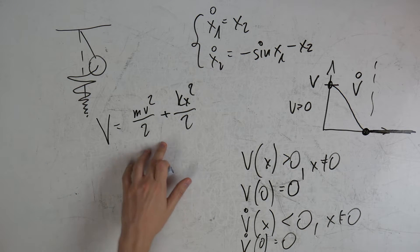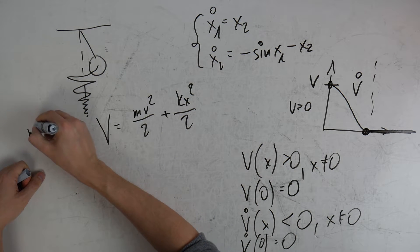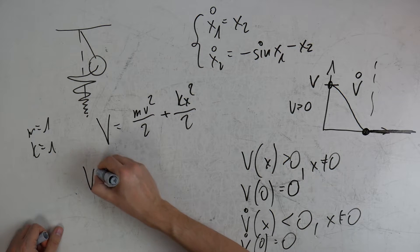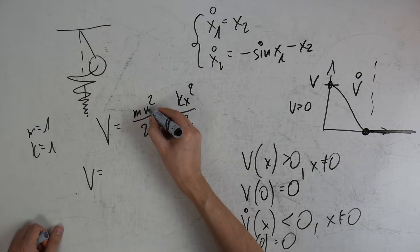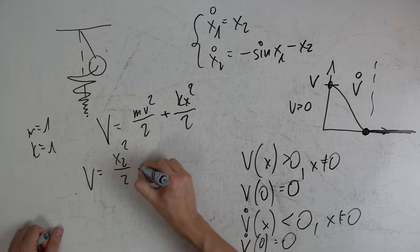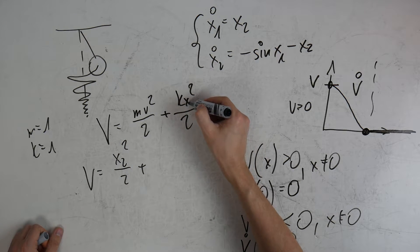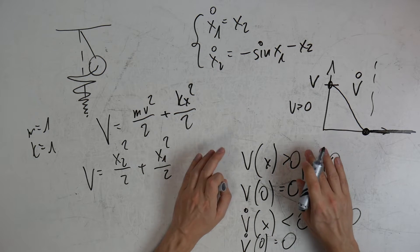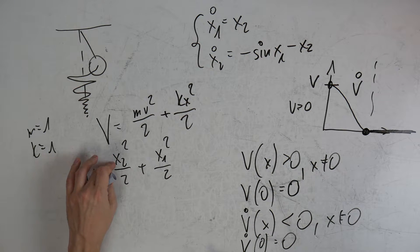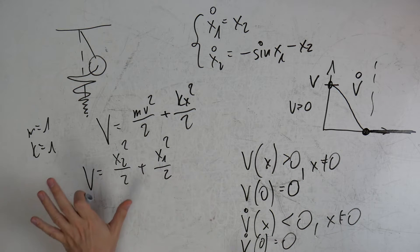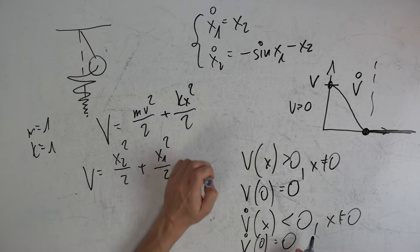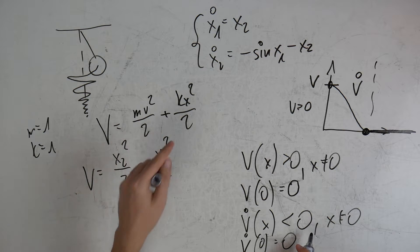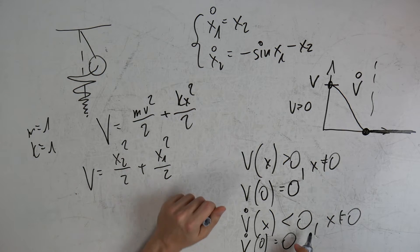Let's test the first candidate. Assuming mass one and spring constant one, I have V = x2²/2 + x1²/2 — kinetic energy plus spring-like potential. Is it bigger than zero? Yes — it's a sum of squares, there's no chance it's negative. What about being zero at zero? Zero squared plus zero squared equals zero. Two requirements satisfied.